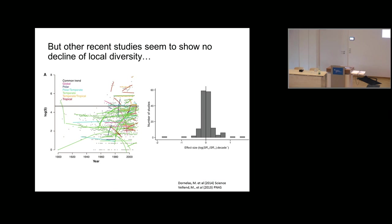To everyone's surprise, they found no trend in species richness in these community assemblages — animals, plankton, and plant plots alike — no detectable trend in species richness at the local scale. So we face this paradox: some say we have a sixth mass extinction, a major catastrophe, yet when people look at trends in local species richness, they find no detectable trend. How do you explain that?